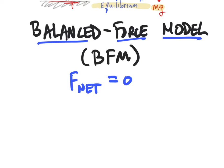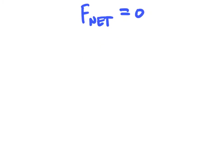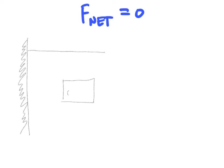Let's go back to a new situation. Say we've got a store, and on that store — here's the side of the building — we want to hang a sign. We put out a post and then we have this sign that says 'open.' We want to hang that sign by two ropes: one rope goes up here and another rope goes up here, attaching onto the pole. This is another case where all of the forces on that sign are going to balance out — a case of the balanced force model.